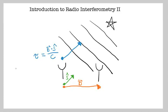Equivalently, if we were looking at one particular frequency, we could measure the number of wavelengths between the two antennas. In that case, we take the projection of the baseline vector B dot S and divide by the wavelength, lambda. This measures the number of wavelengths between the two antennas, which tells us the phase between them.